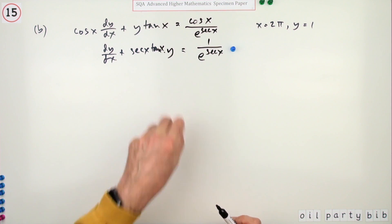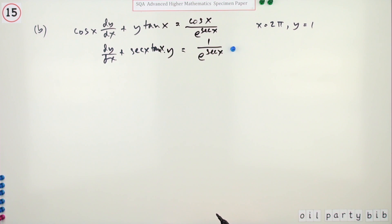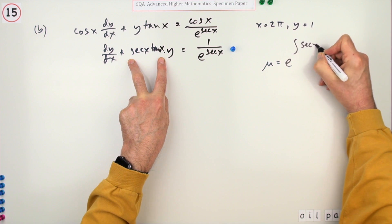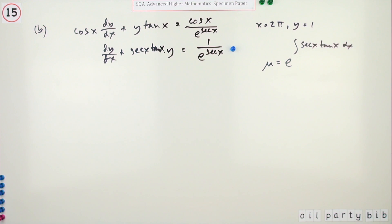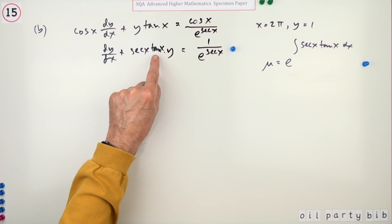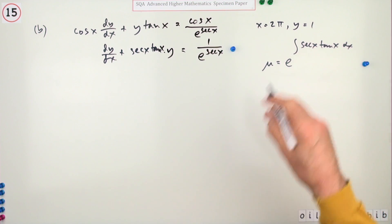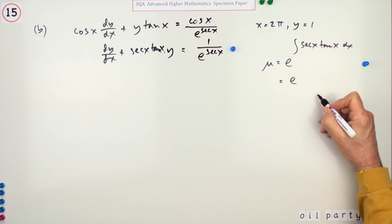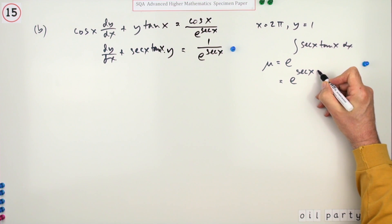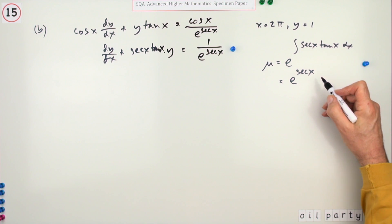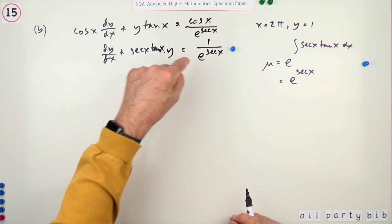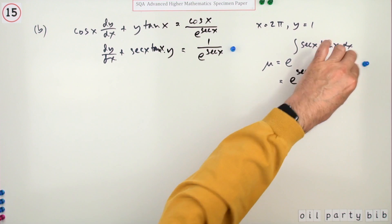You solve this using an integrating factor. Work it out at the side: it's e raised to the integral of the coefficient of y, which is the integral of sec x tan x dx. You recognise that standard integral — it's sec x. So the integrating factor is e^(sec x). You don't need a +c from that integration since it would just multiply all parts and cancel. Finding this integrating factor earns a mark.